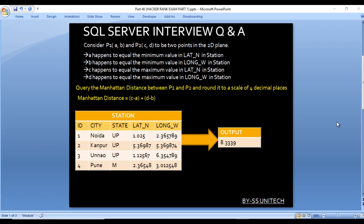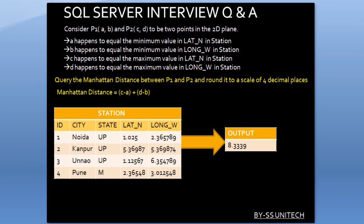Consider P1 as (A, B) and P2 as (C, D) to be two points in a 2D plane. We have an input table with a total of five columns: id, city, state, latitude, and longitude. Write a query to get the Manhattan distance between P1 and P2 and round it to a scale of four decimal places.